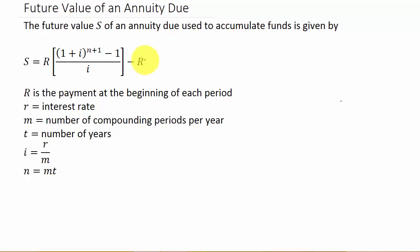And then minus R. The formula for the future value of an ordinary annuity is just like this one almost, except the exponent is just N instead of N plus 1. And you see this minus R — that's not in the future value of an ordinary annuity. So here's the formula for the future value of an annuity due. If it tells you the payments are at the beginning of each period, then it's the future value of an annuity due.